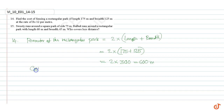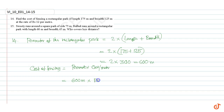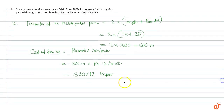Cost of fencing is equal to perimeter into cost per meter. This is equal to 600 meters into 12 rupees per meter, which is equal to 600 into 12 rupees. This is equal to 7200 rupees.